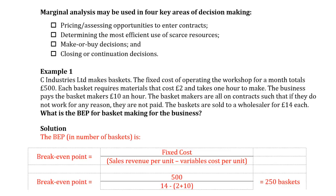Anything else will of course be considered as irrelevant, so we should ignore it. This usually means that fixed costs can be ignored. Therefore, the variable cost per unit will be equal to the marginal cost, which is the additional cost of producing one more unit of output.